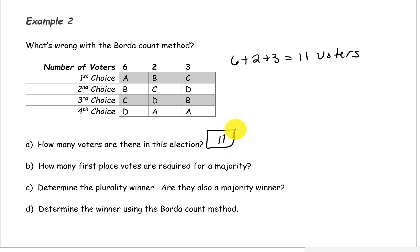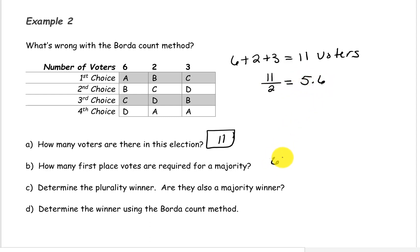Next, how many first place votes are required for a majority? We need to take the total number of voters and divide by 2. 11 divided by 2 is 5.5, so for a majority we would need 6 total voters.